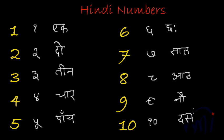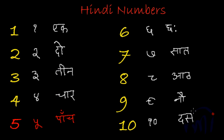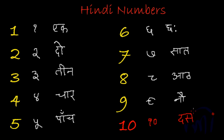So now let's repeat the numbers once again. The numbers are: ek, do, teen, chaar, paanch, chhey, saat, aath, nau, and das.